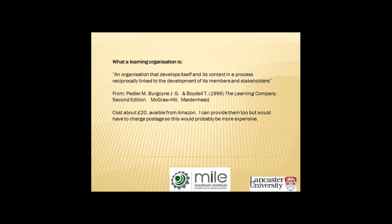Here's the definition that me and my colleagues work with: a learning organisation is one that develops itself and its context in a process reciprocally linked to the development of its members and stakeholders. It develops itself, but sometimes organisations also develop their context. For example, an organisation in the middle of a supply chain may influence organisations up and down that supply chain. And this is reciprocally linked to its own members — people who work for it — and other stakeholders.